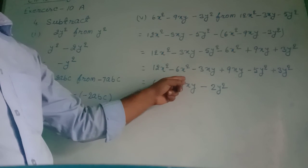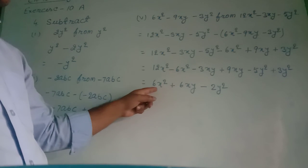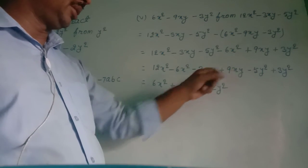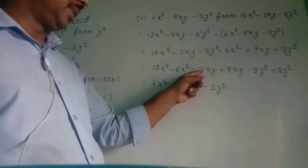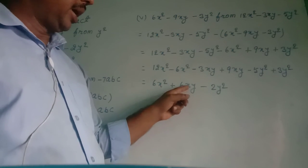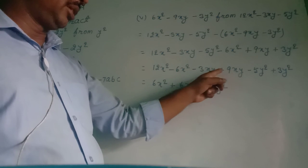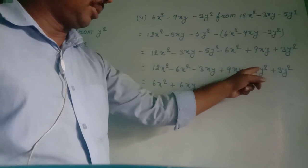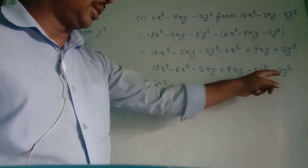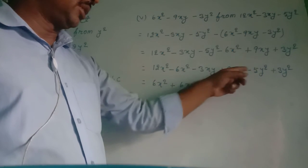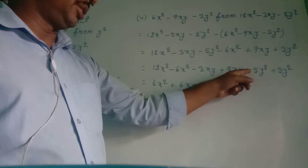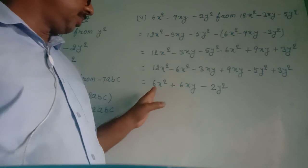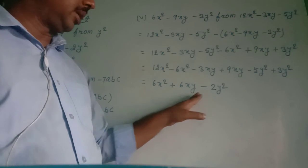Solving: 12x² minus 6x² equals 6x². For the xy terms: minus plus minus means subtract — 9xy minus 3xy equals 6xy, and the sign of greater term 9xy is plus, so plus 6xy. For the y² terms: minus plus minus means subtract — 5y² minus 3y² equals 2y², and the sign of greater term 5y² is minus. Answer: 6x² plus 6xy minus 2y².